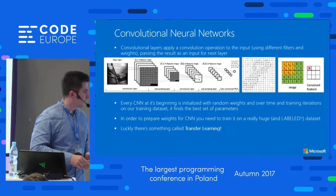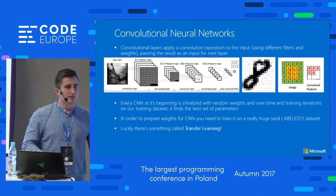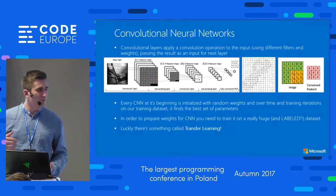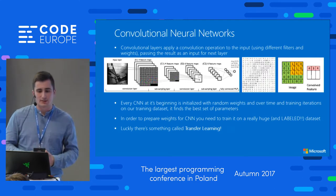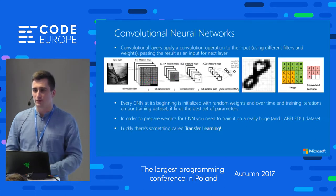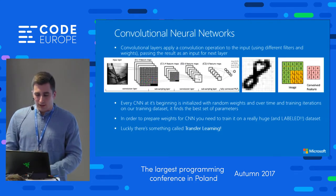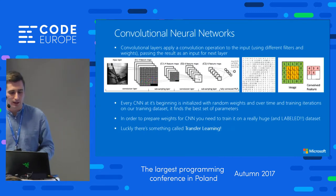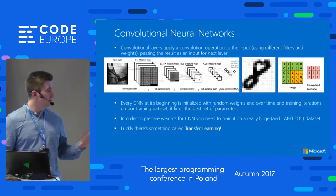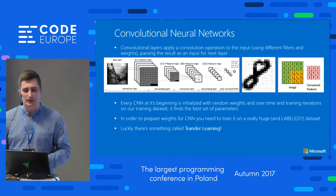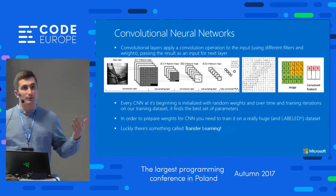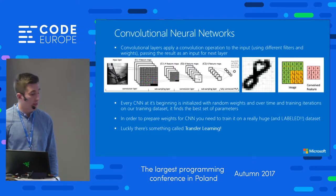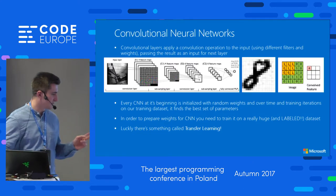Based on those filters the network generates feature maps, which are used for classification. Every CNN at the very beginning is just stupid — it takes random weights and tries to transform images. In order to make it smart, we need a huge amount of labeled data. Imagine we only tagged around 120 images, and tagging 20 million images would be very, very time-consuming.